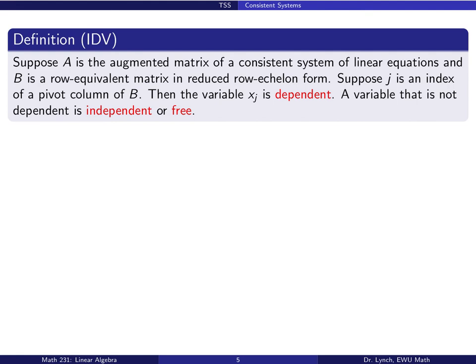If A is the augmented matrix of a consistent system of linear equations and B is the row equivalent matrix in reduced echelon form, then every pivot column corresponds to a variable that's dependent. A variable that's not dependent is a free variable. So as a preview — and maybe you'll pause the video and think about this — what happens to an augmented matrix? Remember that this augmented matrix has n plus one columns. If when we reduce it to reduced row echelon form that last column is a pivot column...